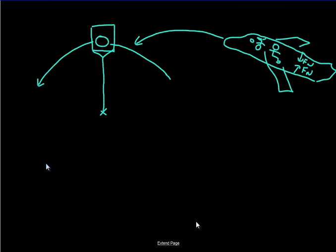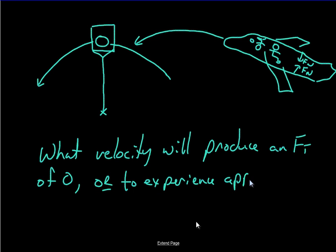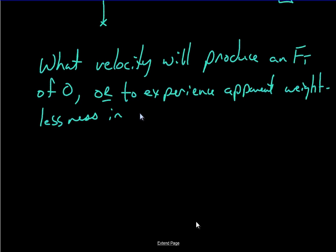So let's figure out this thing. So I want to know what velocity will produce weightlessness or will produce, in this case, an FT of zero. Or in the case of astronauts in training or even to shoot movies sometimes, or even just for fun. I think you can get paid to go do this, to experience weightlessness. I should be careful because it's apparent weightlessness in vertical circular motion.